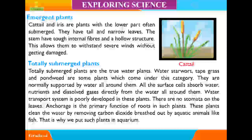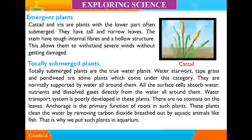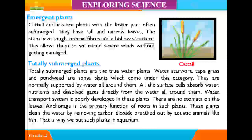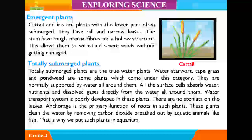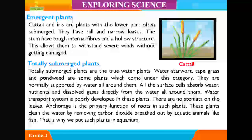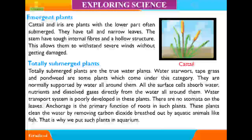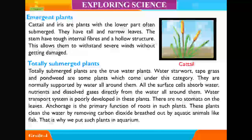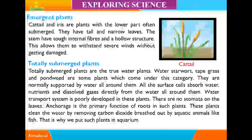Totally Submerged Plants. Totally submerged plants are the true water plants. Water starwort, dead grass, and pondweed are some plants which come under this category. They are normally supported by water all around them. All the surface cells absorb water, nutrients, and dissolved gases directly from the water. Water transport system is poorly developed in these plants and there are no stomata on the leaves. Anchorage is the primary function of roots in such plants. These plants clean the water by removing carbon dioxide breathed out by aquatic animals like fish. That is why we put such plants in aquariums.